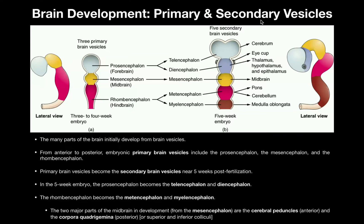We're going to look at the development of the major parts of the brain initially from primary brain vesicles, which are shown over here on the far left. This is what is developed in a three to four week embryo — we're talking about embryonic development here, well before birth. With these primary brain vesicles, we typically talk about them from anterior to posterior. The most anterior of these is what's called the prosencephalon, which will eventually develop into the forebrain.